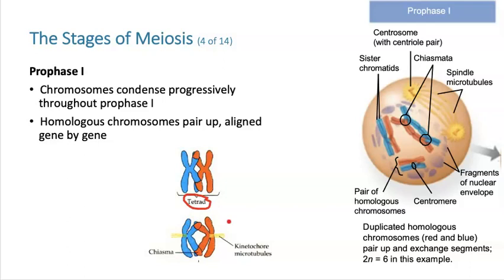Then what happens is that they do this thing called crossing over. Crossing over happens where non-sister chromatids exchange bits of information, so they become mixed chromosomes. The kinetochore microtubules are still going to connect to the kinetochore, but instead of happening on either side of the sister chromatid like it did in mitosis, it's actually connecting to different sets of the pair — one set of kinetochores attached to the north pole and the other set connected to the south pole. So they're going to eventually pull apart these homologous chromosomes.